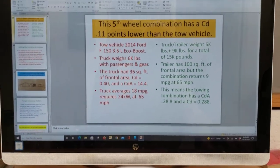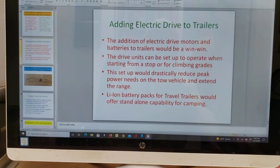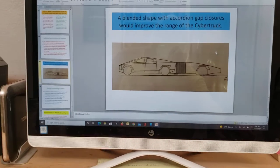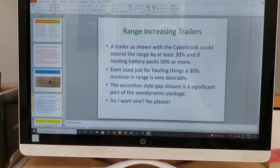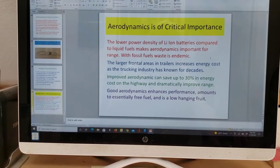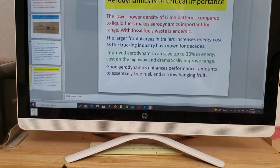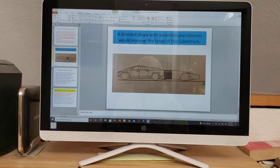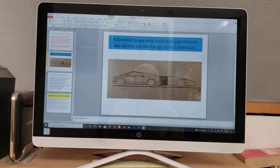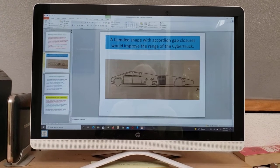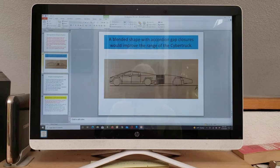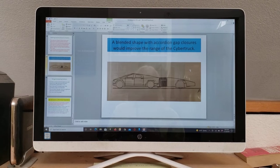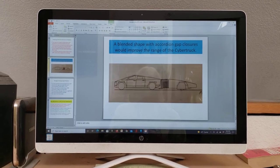I'll get into this later, because I want to go through this whole slide set and I will set up a tripod to do it. This is a concept which I've been trying to get across to people for quite a while: it's actually possible to tow a trailer and increase the range of your vehicle. For example, we're showing a Cybertruck here with a trailer with an accordion gap closure.